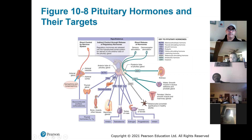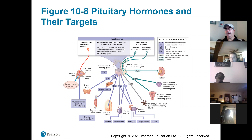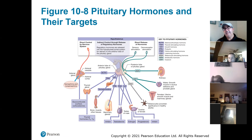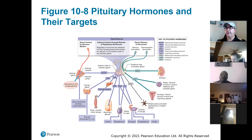For most people, GH secretion dramatically decreases with age, but some people continue releasing GH throughout their lives — that's a disorder called acromegaly, which Andre the Giant had. He kept growing; comparing photos from age 20 to 40, his forehead widened and his jaw grew. Eventually his organs kept growing and his body couldn't keep up with the demands, which is what killed him. A surgical procedure on the pituitary can limit growth hormone production, but Andre chose not to pursue that.